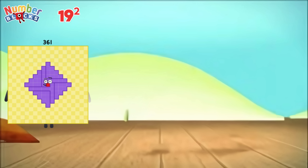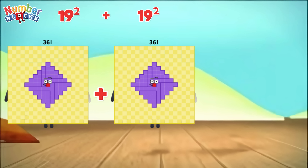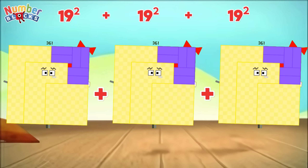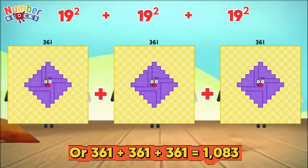19 square plus 19 square plus 19 square, or 361 plus 361 plus 361, is equals to 1,083.